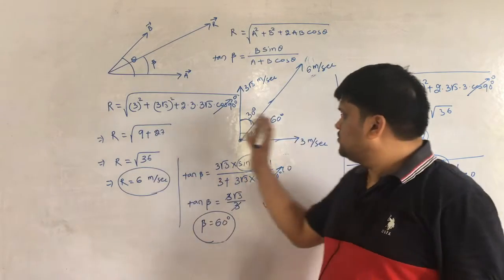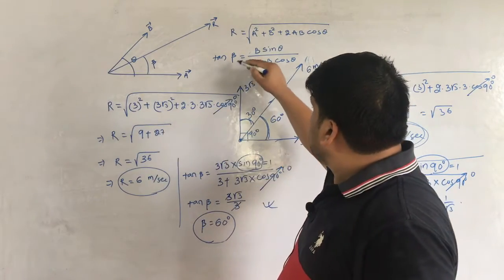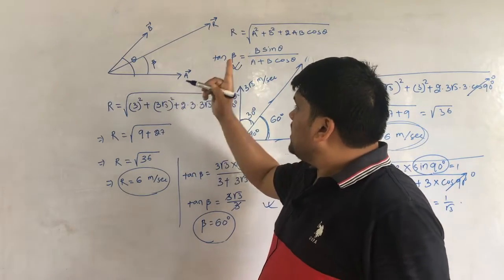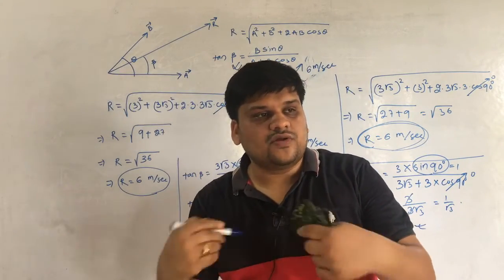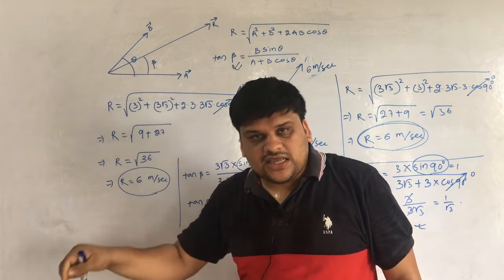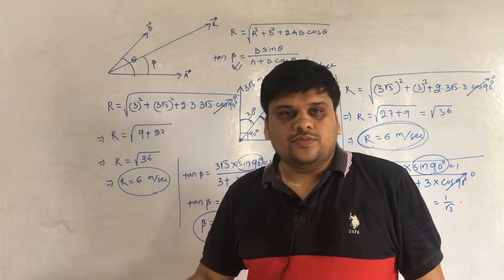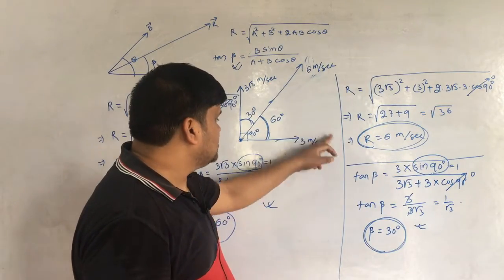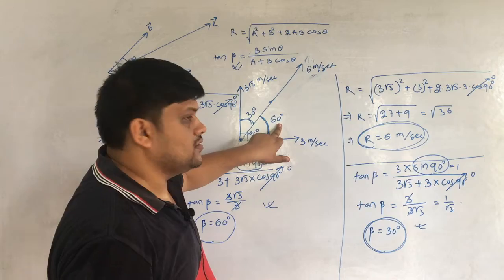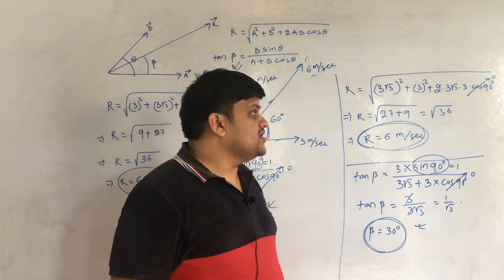The conclusion: beta is always the angle between the A vector and the resultant R. Whichever vector you choose as A, beta will be measured from that vector. You can choose either one — just make sure your beta is referenced to your chosen A vector. Both choices give the same physical resultant direction.